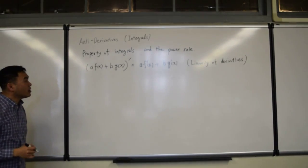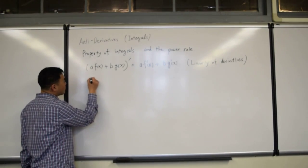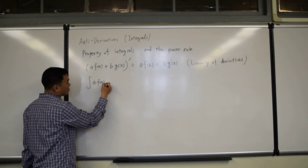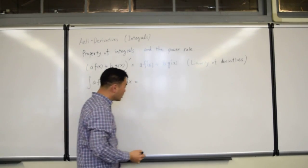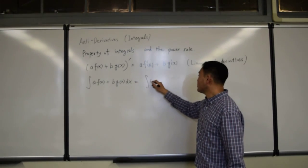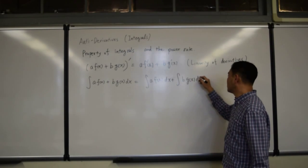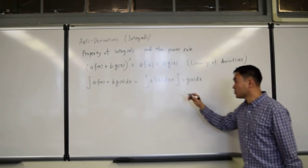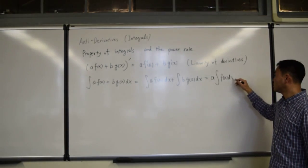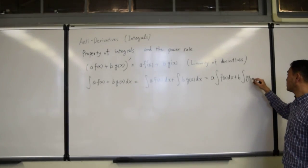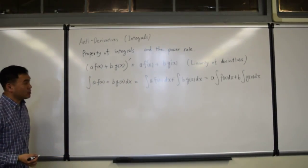Because differentiation satisfies linearity, same thing holds for integration. So if you have integration of a function times a constant and another function times a constant, then it's the same as first integrating them separately. And any constant multiple can be pulled out, just like when we did it for derivatives.